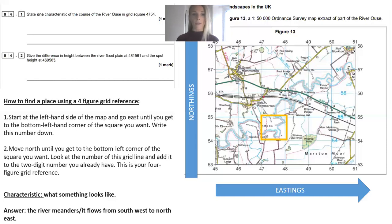For the next question, give the difference in height between the river flood plain at 481561 and the spot height at 460563. You need to be able to interpret six-figure grid references. As you can see, the level of challenge has increased quite significantly from 4.1 to 4.2. The examiners are also expecting you to be able to interpret height on a map.